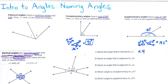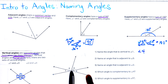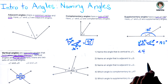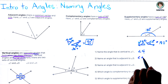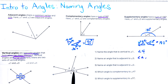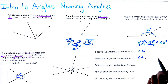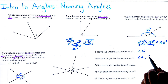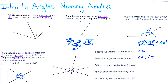The second question: name an angle that is adjacent to angle three. Angle three is right here, and I can see that angle three shares a side and a vertex with angle two. But wait — angle three also shares a side and a vertex with angle four. So there are actually two angles adjacent to angle three: angle two and angle four.